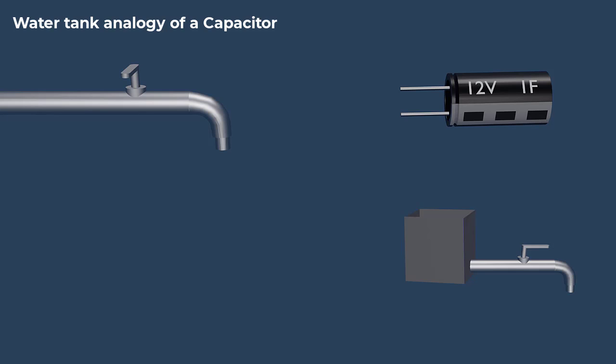A water tank is a good analogy for understanding how a capacitor works. Imagine a water pipe with a valve on one side. When the valve is open, water flows out at a constant rate.